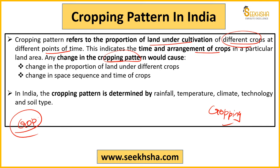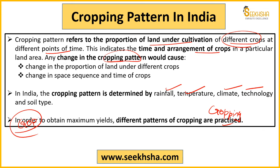When we talk about cropping pattern in India, the factors that affect it include rainfall, temperature, climate, technology, soil, and social factors. We will discuss which factors influence it. The objective is to maximize yield through different cropping pattern practices.